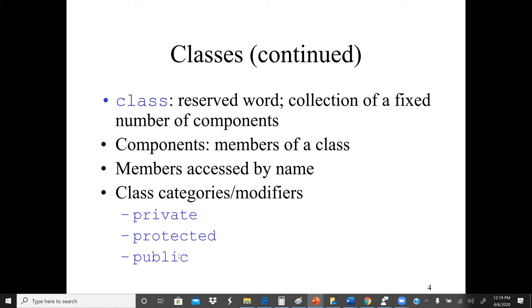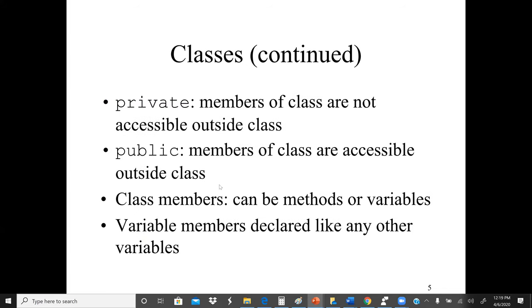Public means any class members in another class, or any methods within the program, can have access to it. Protected deals with what we call inheritance: if class A inherits class members from class B, we can make the instance variable protected, which means they can directly access each other. Private members are not accessible outside the class; public members are accessible by any class in the program.